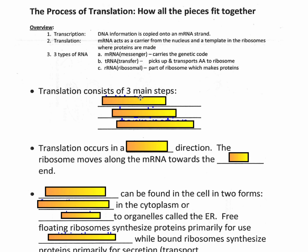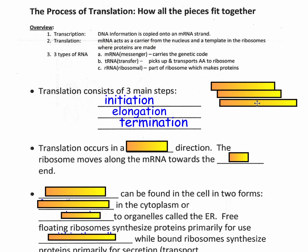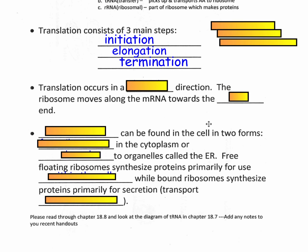Translation is about building the protein. Initiation means the starting. Elongation means we're increasing the length of the actual protein by adding more amino acids. And then finally it's going to terminate — it stops and that protein folds up. Just like in DNA replication and transcription, the direction matters: in translation, the five prime to three prime direction is also very important.